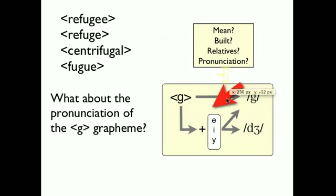But, if it's followed by an E, I, or Y, that G could represent hard G, but it could also represent soft G. And that's what we see here, that when an E is following the G, it's able to be soft G. But, if there isn't an E, I, or Y after it, as in centrifugal or fugue, then the G is always going to be represented as hard G. So, we've touched on all of those.